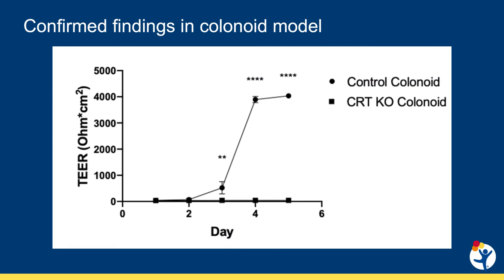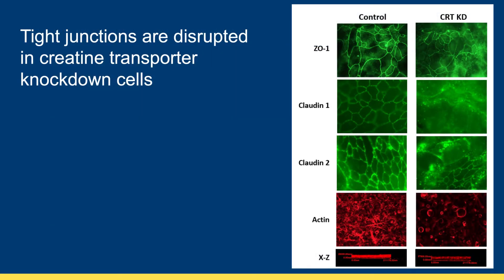In order to validate these results in primary cells, we developed colonoids, or mini guts, from mice which had genetic loss of the creatine transporter. When these cells were grown in a monolayer and their barrier was compared to cells from wild-type mice, there was a significant barrier deficit as measured by TEER. Tight junctional protein localization is key to barrier formation, as was mentioned in the introduction. We therefore stained for tight junctional proteins in the creatine transporter knockdown cells, as seen in the green staining. We found that there was a significant mislocalization of the proteins which normally form a clean chicken wire appearance at the tight junctions. The tight junctional proteins were found intracellularly in these cells.